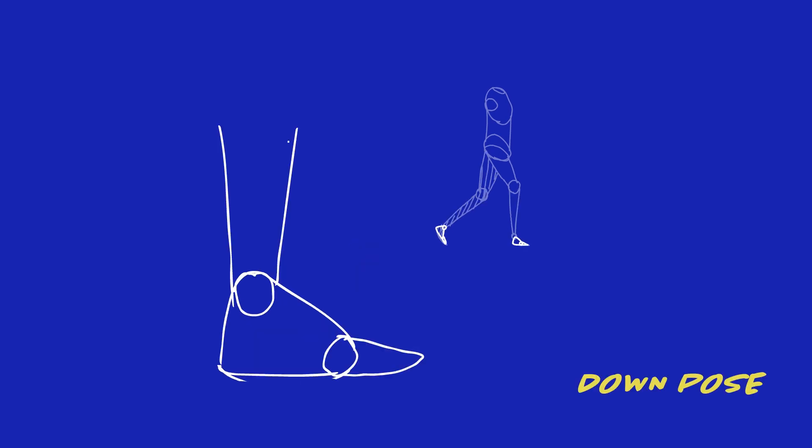Now we are going to look into the foot poses in a walk cycle. Same as before, we have a bigger model of the foot and here just the body, legs, and foot. This is the contact pose — we are going to focus on the right leg. This is the front foot of a contact pose: the heel is planted on the ground and the foot is pointing upwards. Now if we go into the down pose, the pivot would be at the heel — it will remain static and the foot would rotate within its axis.